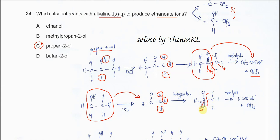Then this one undergoes hydrolysis, and you form methanoid acid — here we get OH and here we get H. So at the end you do not get the ethanoid ion; you get the methanoid ion instead. Therefore ethanol cannot be accepted as the answer.